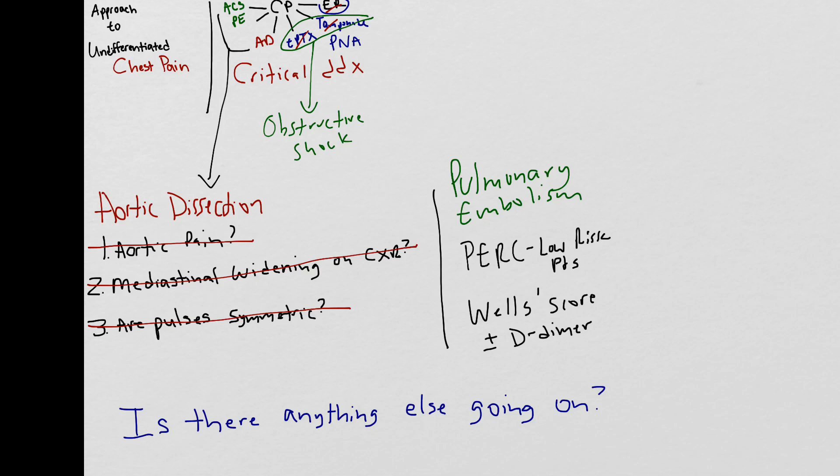Maybe there's a zoster rash that you didn't notice initially on the chest and that's why there's chest pain, or maybe you can determine if there's a clear-cut MSK component to the pain. If you can't convince yourself that there's anything else going on, then you have to put your patient on the ACS pathway.